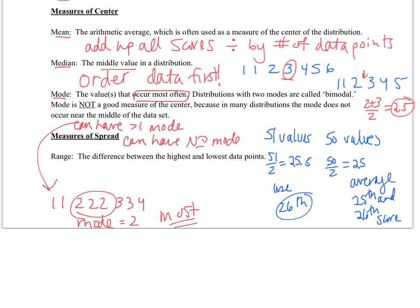Our last measure of center is the range. The range is simply found by taking the highest value minus the lowest value. And again, these don't have to be in order as long as you can find the highest and the lowest.